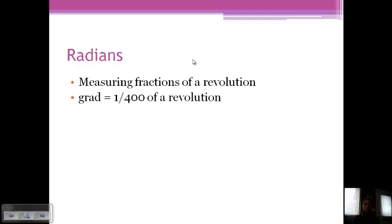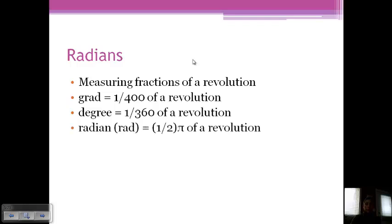So a grad is 1/400th of a revolution. We know a degree is 1/360th of a revolution. And then we have a radian, abbreviated with RAD, which is 1 half pi of a revolution. And so if one radian is 1 half pi, then a full or complete revolution is 2 pi radians.